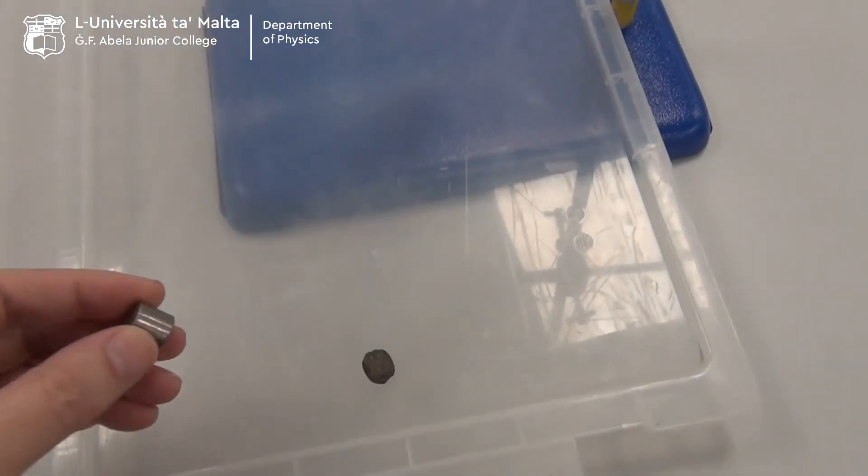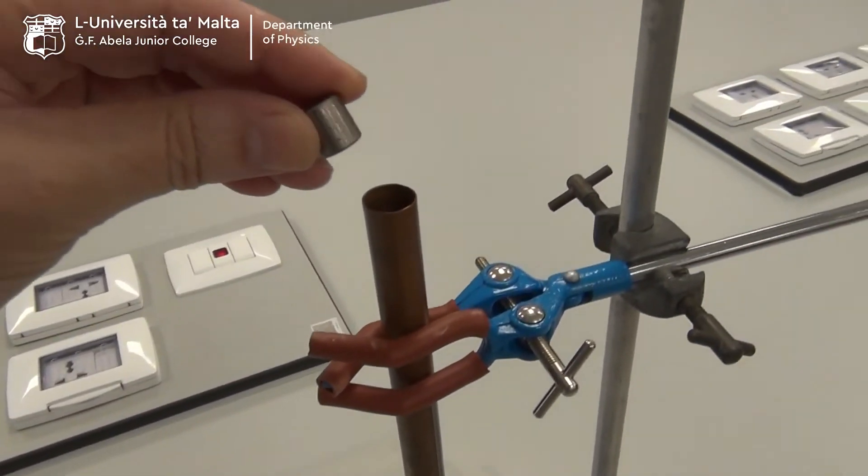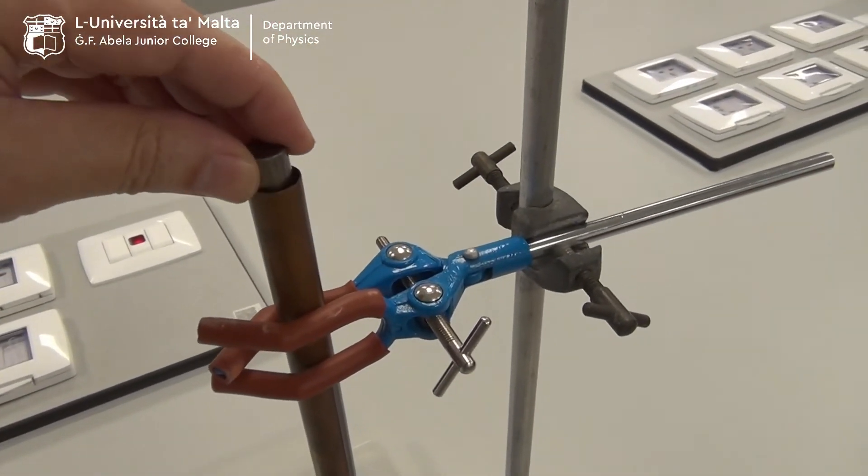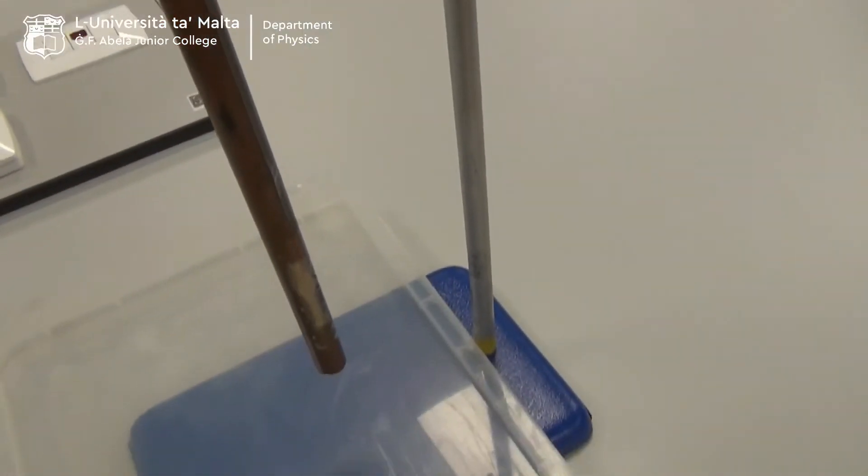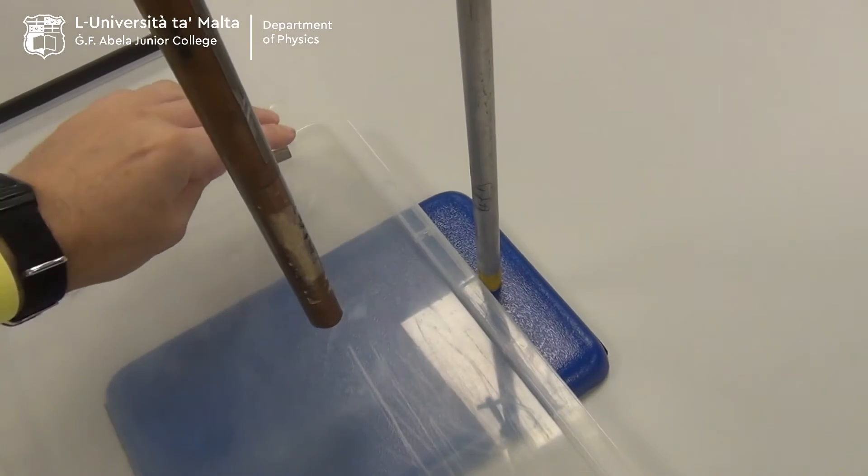We start with the piece of iron and we place it in the tube and release. And we note that it falls very quickly.